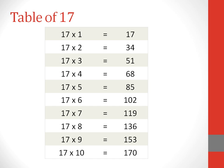Table of 17. 17 ones are 17. 17 twos are 34. 17 threes are 51. 17 fours are 68. 17 fives are 85.